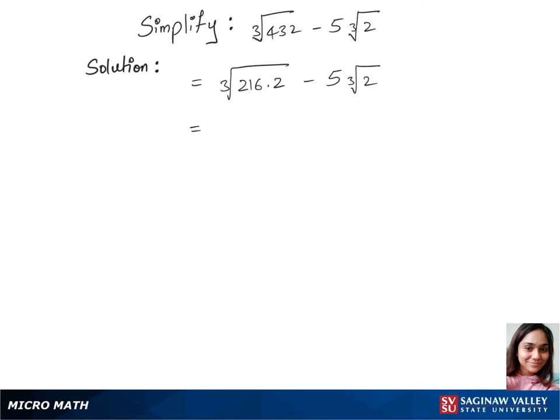Now we'll separate this cubic root between those two, so that's cubic root of 216 times cubic root of 2 minus 5 times cubic root of 2. We can write this first part, cubic root of 216, as 6 because 216 is 6 cubed, times cubic root of 2 minus 5 times cubic root of 2.